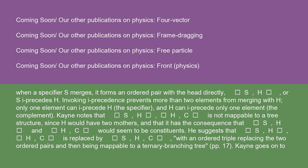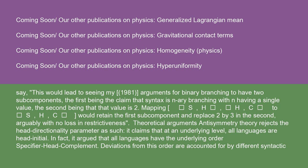Kayne goes on to say this would lead to seeing his 1981 arguments for binary branching as having two subcomponents: the first being the claim that syntax is n-ary branching within, having a single value; the second being that that value is 2. Mapping S, H, H, C to S, H, C would retain the first subcomponent and replace 2 by 3 in the second, arguably with no loss in restrictiveness.